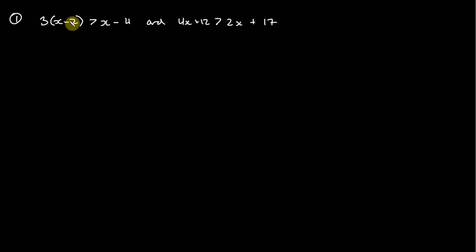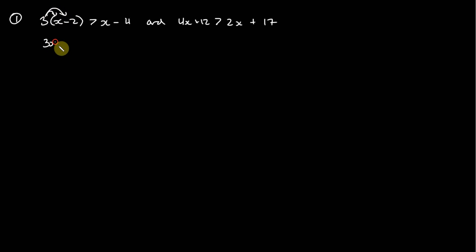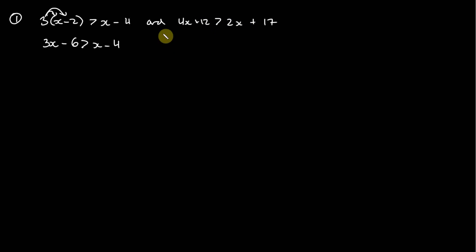For each inequality we just solve it the same way that we would solve a standard linear equation. First we'll distribute the 3, so it's going to be 3x minus 6 is greater than x minus 4, and I'll work on the right-side inequality simultaneously.